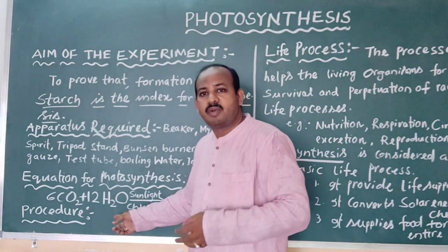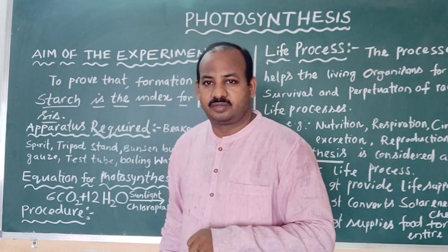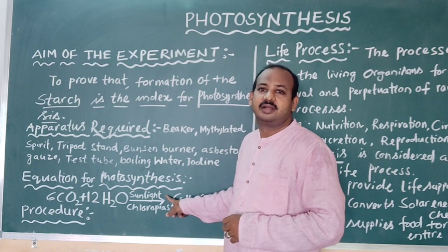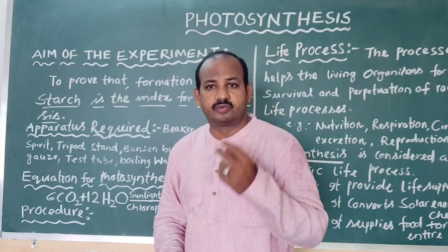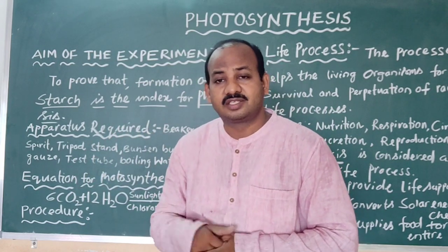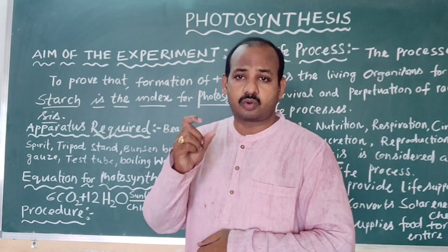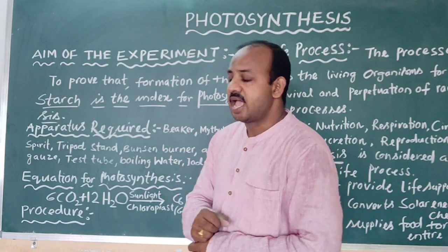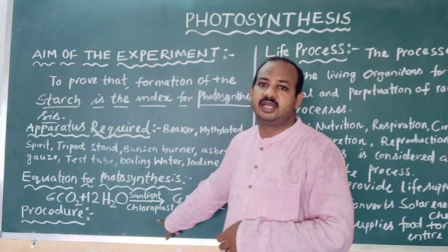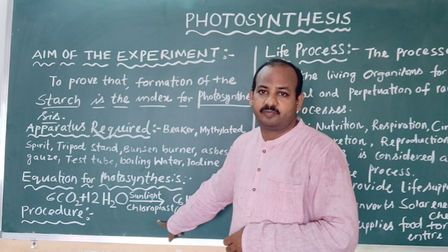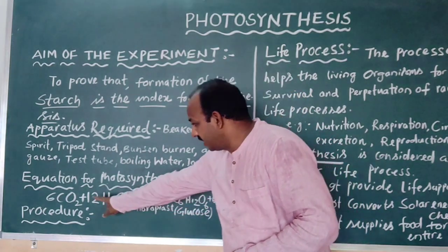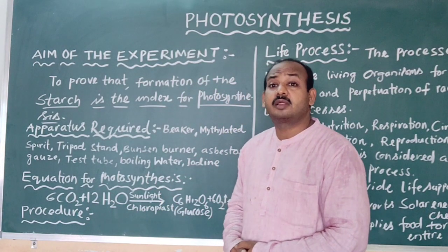Next, sunlight: photosynthesis takes place only in the presence of sunlight. Higher plants are photo-autotrophs — they use sunlight as their source of energy. Chloroplast is also mandatory; higher plants have chloroplasts in their leaves, which is why they can perform photosynthesis. So the requirements of photosynthesis are: carbon dioxide, water, sunlight, and chloroplast. Now, what are the products of photosynthesis?